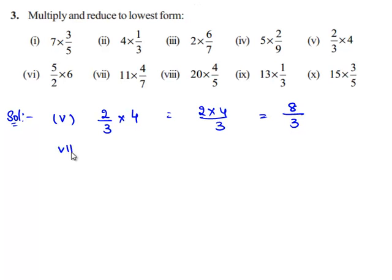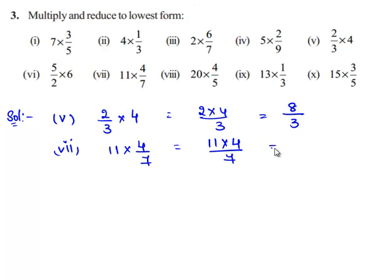Now let us move on to the seventh bit: 11 times 4 by 7. We shall multiply their numerators and denominators respectively. So we have 11 times 4 divided by 7, which is equal to 44 by 7. Since 44 and 7 do not have a common factor, the lowest form of the fraction is 44 by 7 itself.